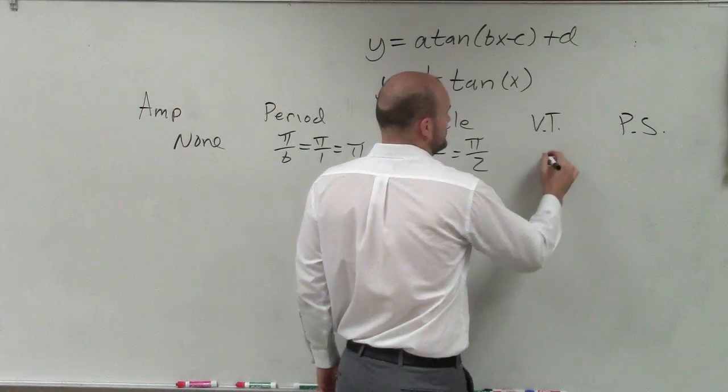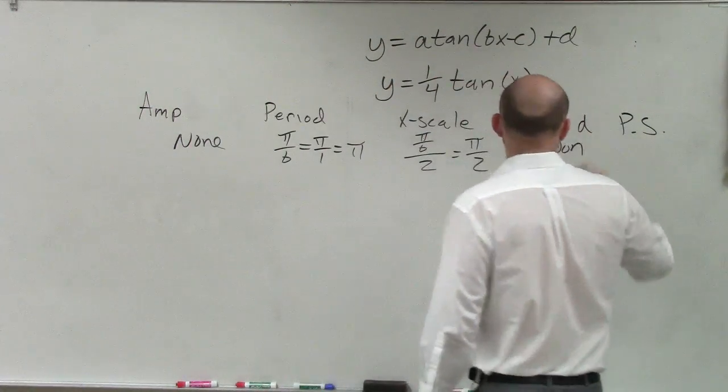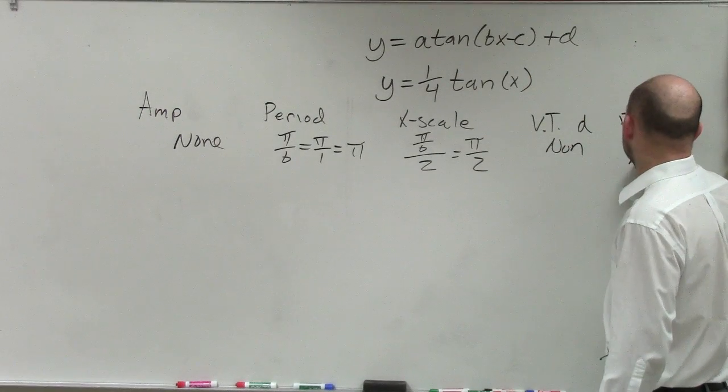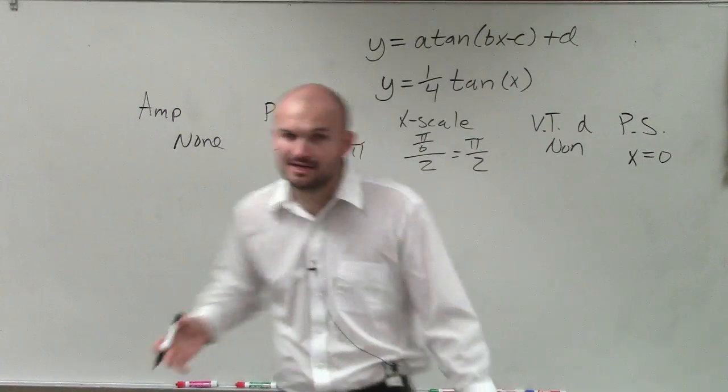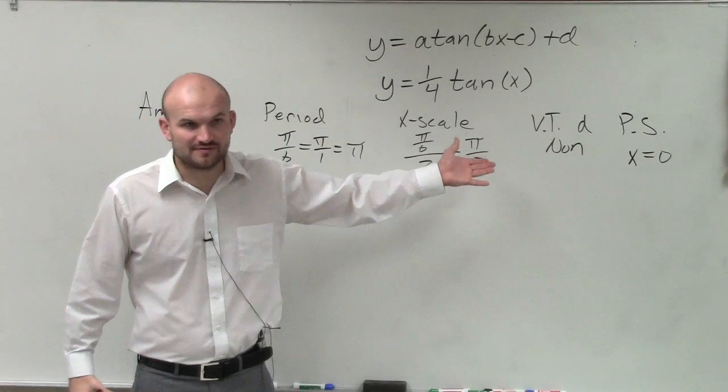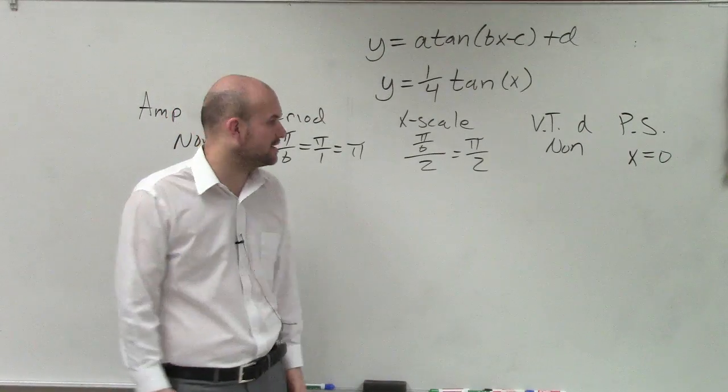My vertical transformation is d, which is nonexistent. And my phase shift, which is going to be x equals 0, because there's no b and there's no c. So therefore, is there any phase shift? No, I'm just starting at 0. I'm not shifting left or right at all.